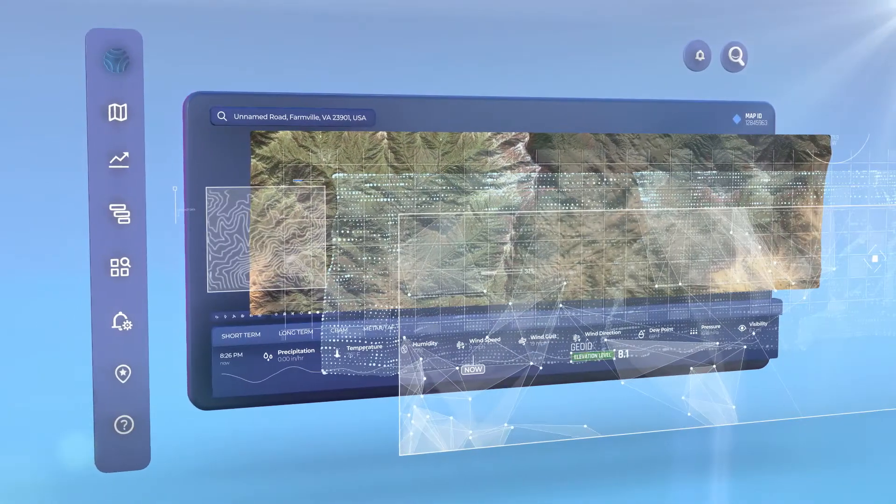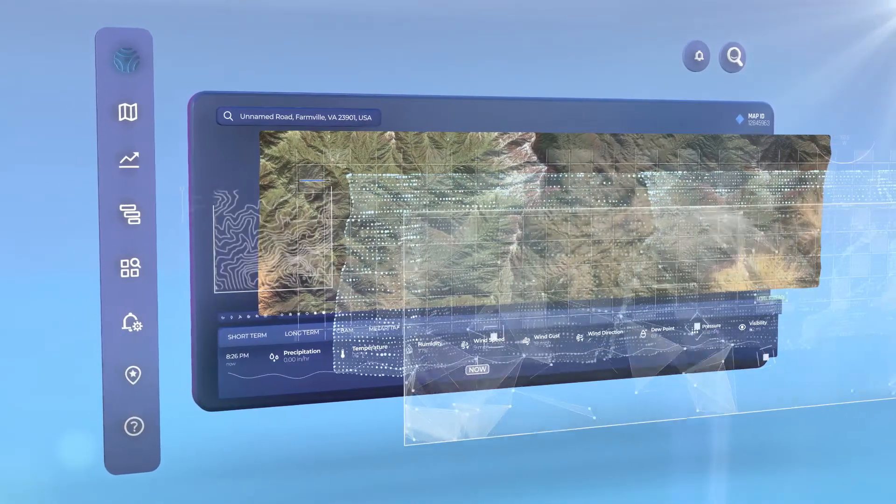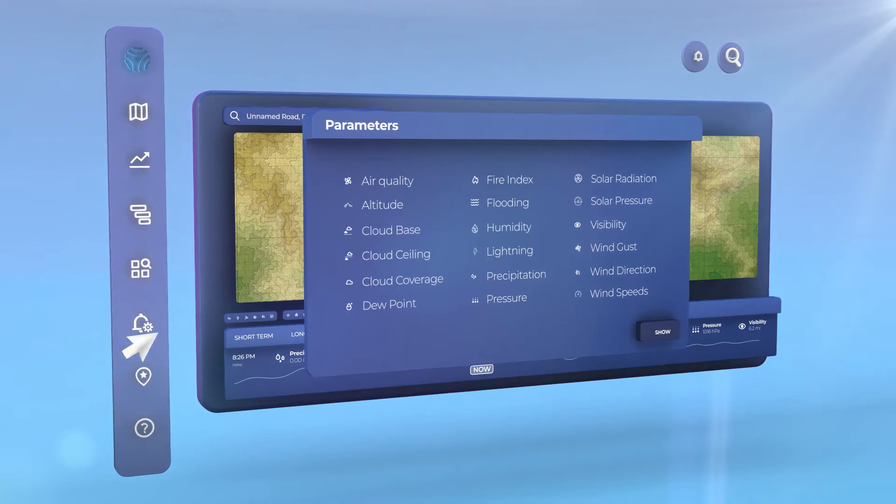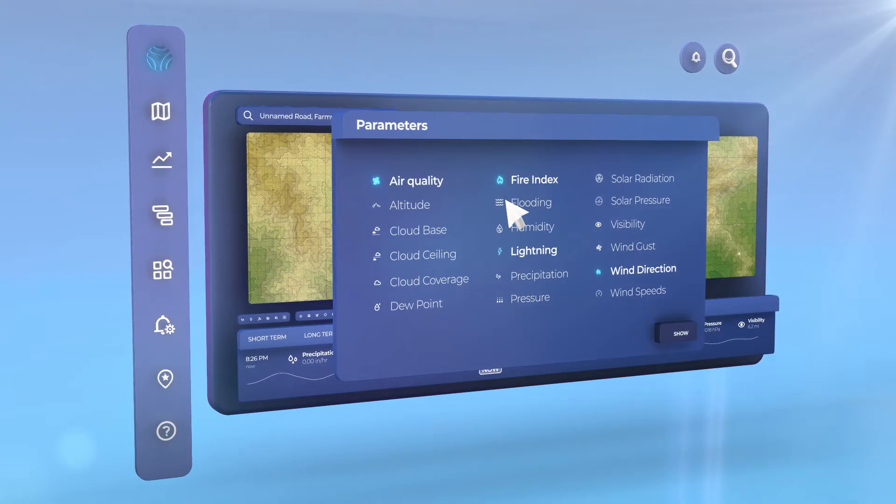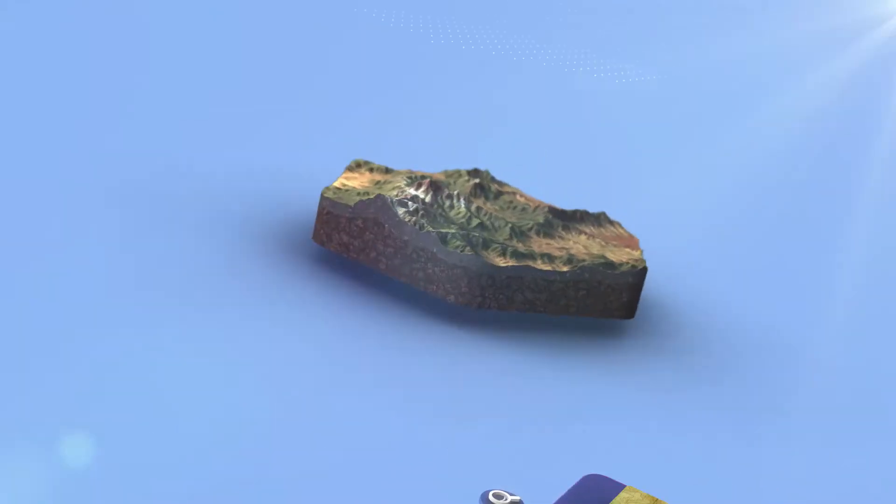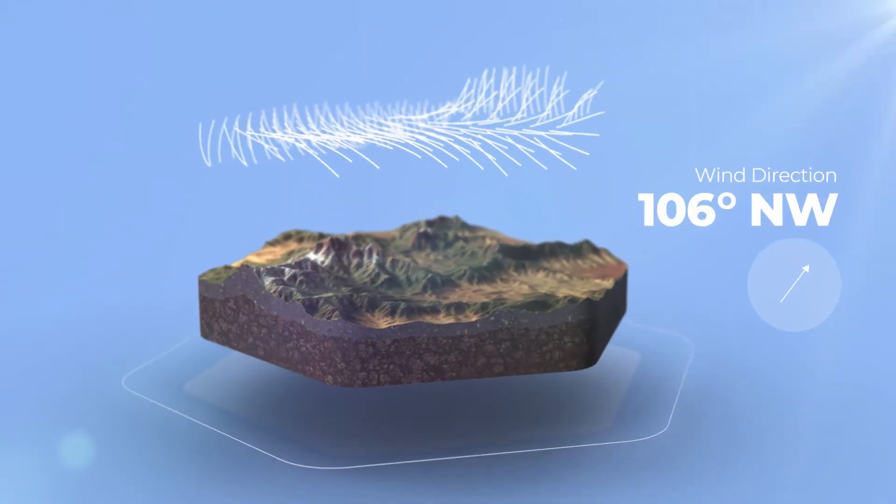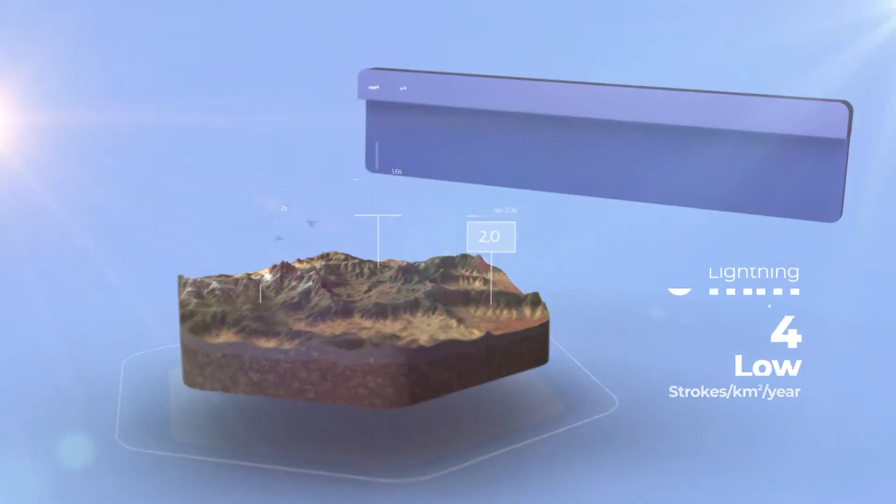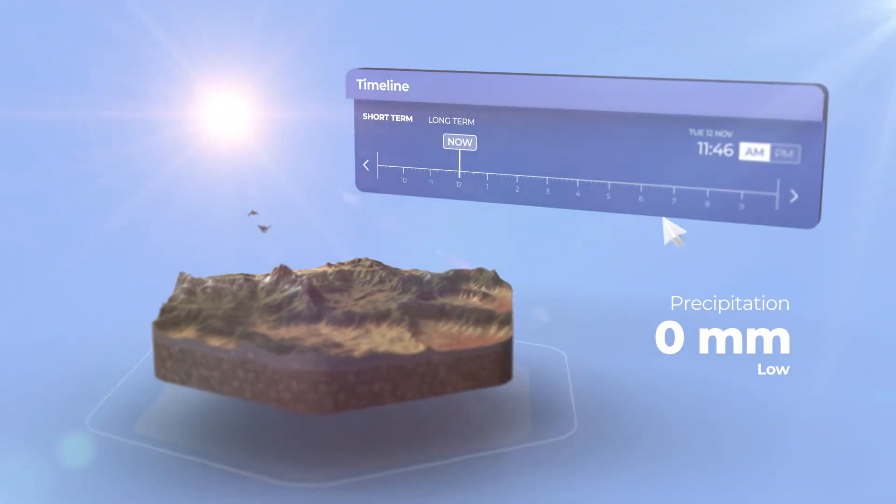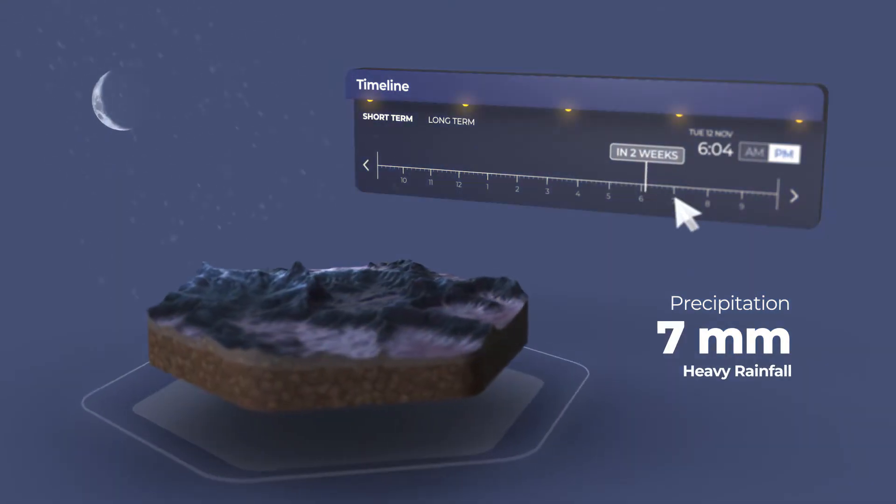Our interactive map and charts allow you to monitor hyper-local locations with more than 30 weather parameters including air quality, wind direction, lightning, fire index, flooding, and more. Each parameter has its own layer so you can visualize weather impact at a hyper-local level and see on a minute-by-minute basis both short-term and long-term forecasts.